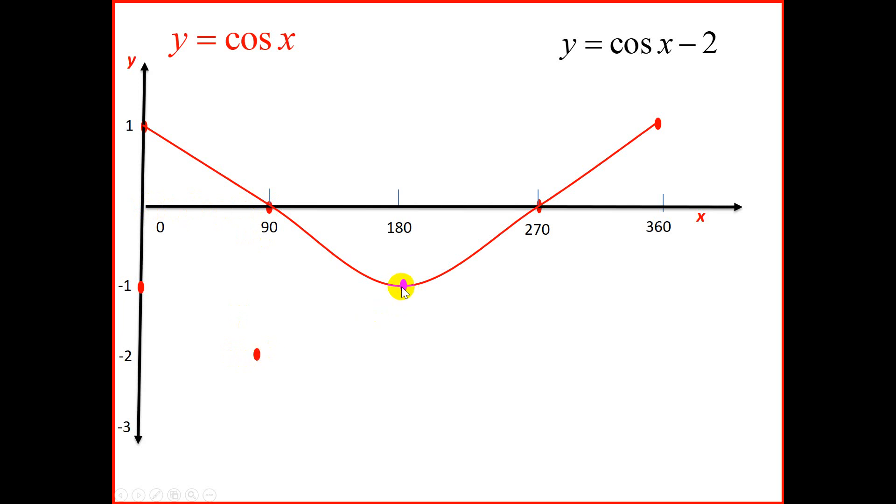This point here at 180 is at minus 1. We're going to move it 2 down. It goes to minus 3. At 270, the point is at 0. So we move it 2 down. It should go to negative 2. At 360, the point is at 1. We're going to move it 2 down. And that should take us to negative 1.